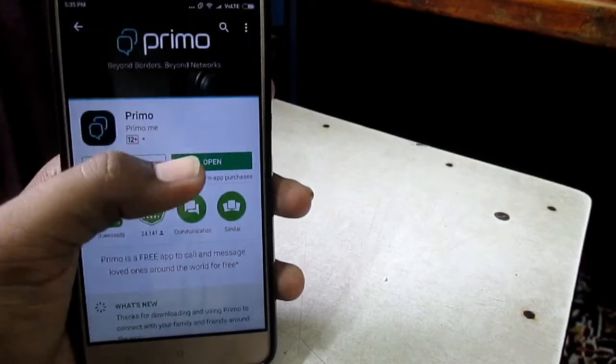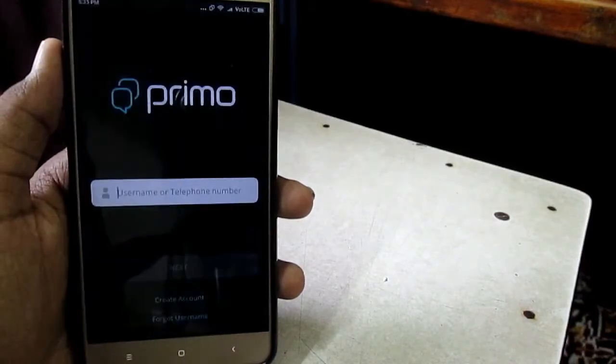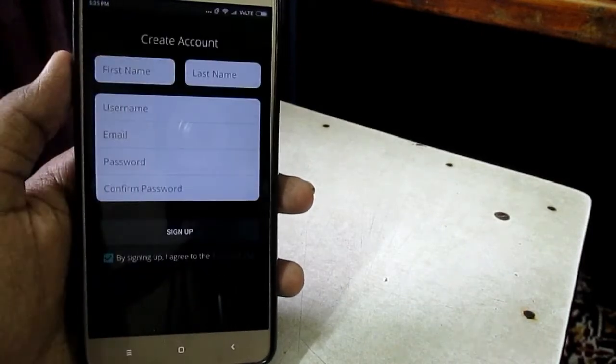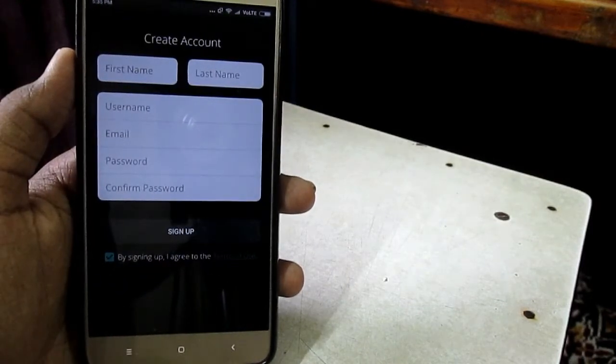First, download an app called Primo from the Play Store. Now sign up for an account. They will also ask you to give your phone number while signing up for an account. You can give it, but if you don't want to, you can skip it.